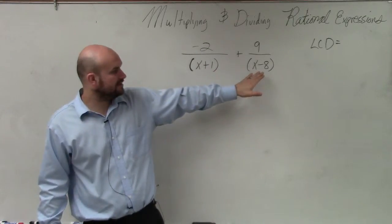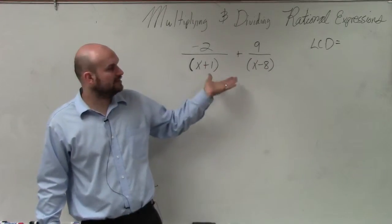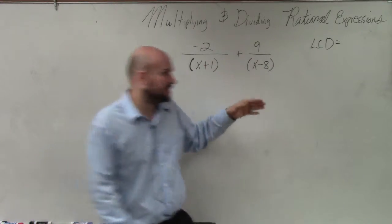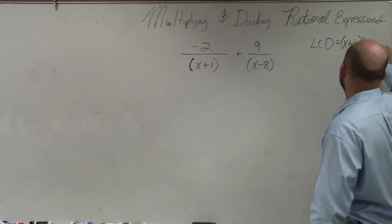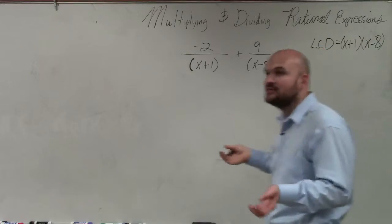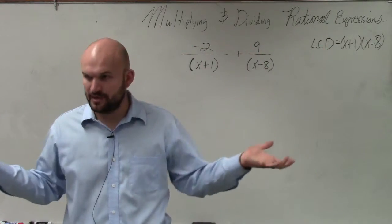So what I would do here, since it's not very apparent what they share, the common denominator that they're both going to share is going to be their product, which would be x plus 1 times x minus 8. So the LCD is simply their product, just like the LCD was 21, 3 times 7.